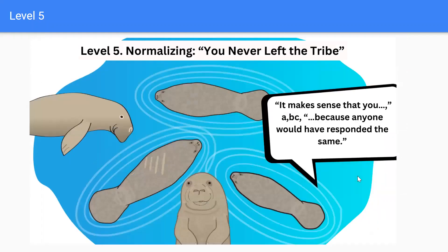Level 5: Normalizing — 'You never left the tribe.' It makes sense that you A, B, C because anyone would have responded the same way.